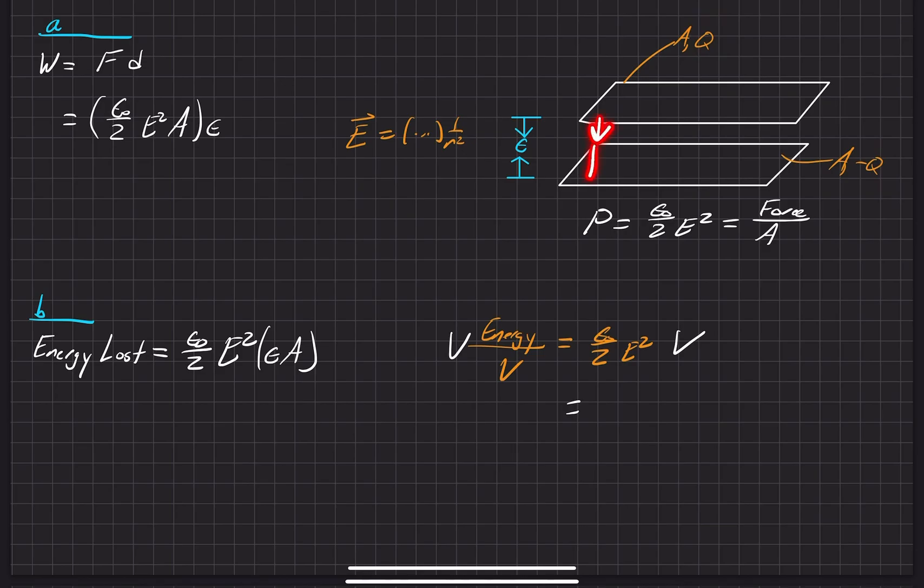The closer that these things get to each other, the smaller the r distance between these two, and the smaller something in the denominator gets, the bigger the electric field has on it.